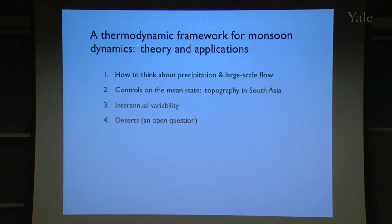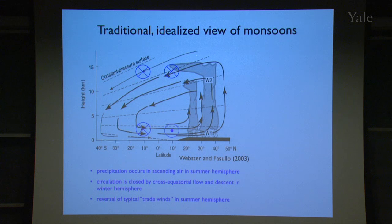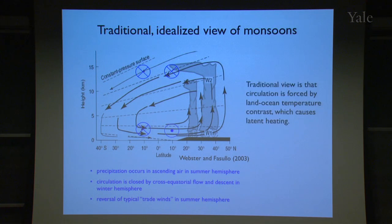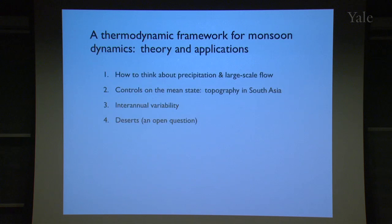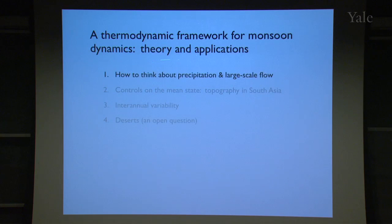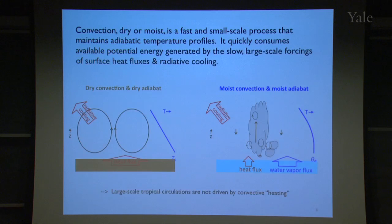What I'm going to do in the rest of this talk is present a thermodynamic framework that allows us to think of these large-scale tropical overturning circulations in which precipitation falls out in the ascending branch. I'll start by explaining that framework and how we think about precipitation in the large-scale flow, then go on to look at several applications.